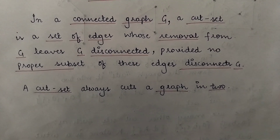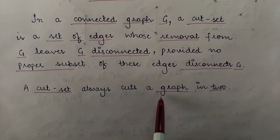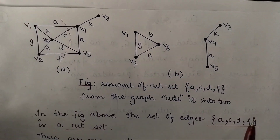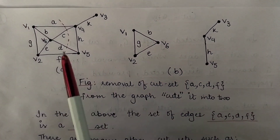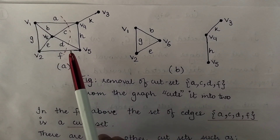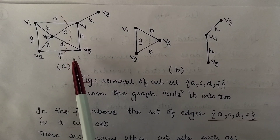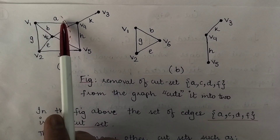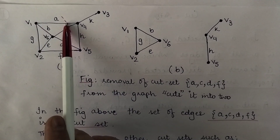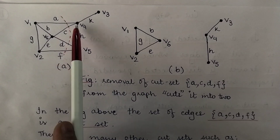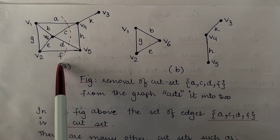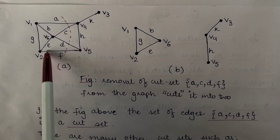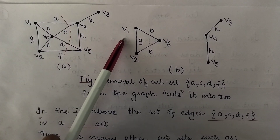A cut set always cuts or divides the graph into components. Let's see through an example. If this is a connected graph G, and I remove the set of edges A, C, D and F from this connected graph — the red dashed lines represent those edges whose removal would leave this connected graph disconnected — that means the removal of these edges would divide this connected graph into two separate components.